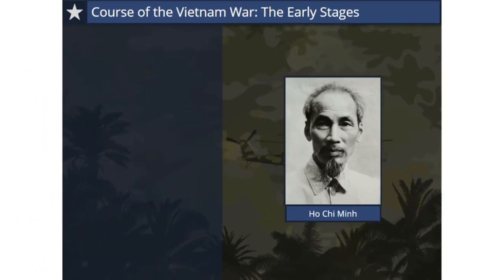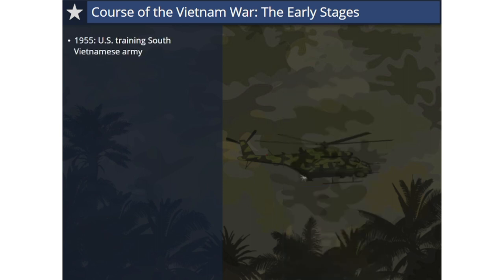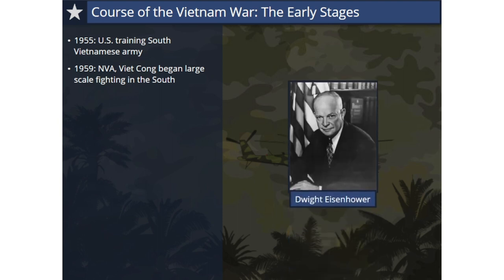With nationwide elections no longer a means for Ho Chi Minh to reunify Vietnam, the communists planned to use force of arms against South Vietnam instead. In 1955, the U.S. began training the South Vietnamese Army to resist the North. In 1959, the North Vietnamese Army and the Viet Cong began large-scale fighting in the South, and in this same year, U.S. advisers were assigned to South Vietnamese Army regiments. President Eisenhower was opposed to the use of U.S. combat troops, believing that military intervention would bog down into a costly stalemate, so he continued dollar diplomacy by providing financial support to South Vietnam.